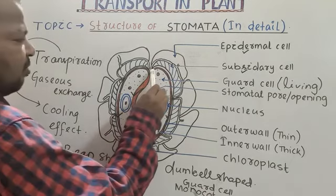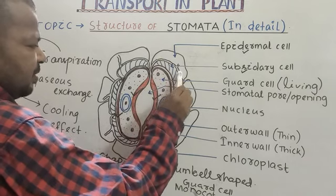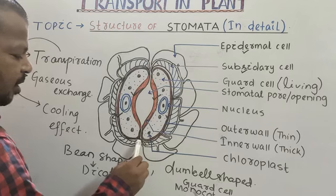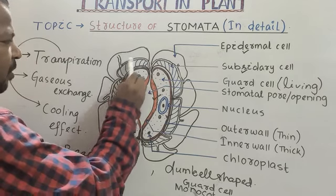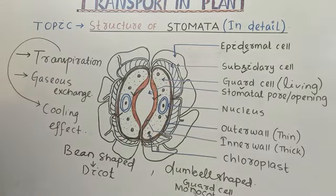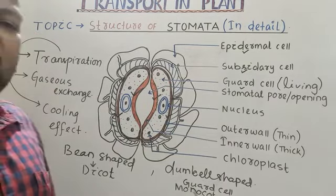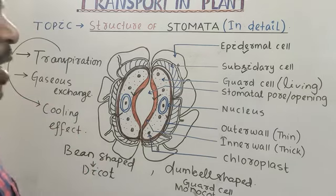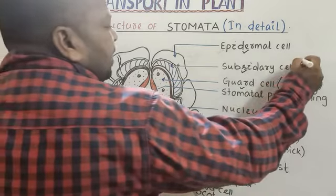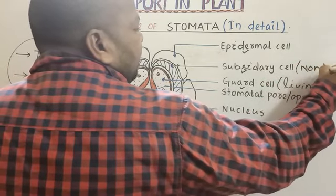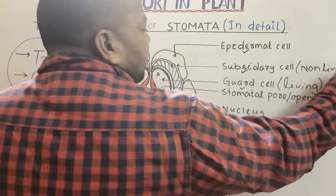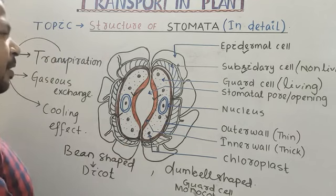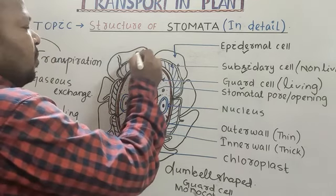Some cells surround the guard cell. These are called subsidiary cells. But subsidiary cells have no nucleus; hence subsidiary cell is non-living due to the absence of a nucleus.